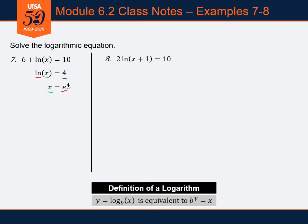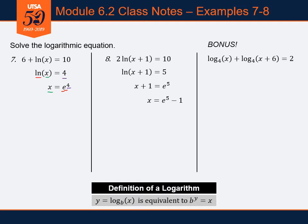Spoiler alert — it does. Question 8: 2 times the natural log of x plus 1 equals 10. Isolate the logarithm by dividing both sides by 2, giving natural log of (x + 1) equals 5. Converting to exponential form: e to the fifth equals x plus 1. Subtract 1 on both sides: x equals e to the fifth minus 1.